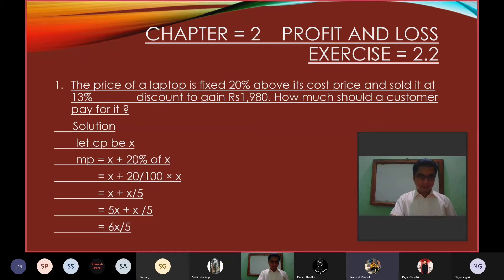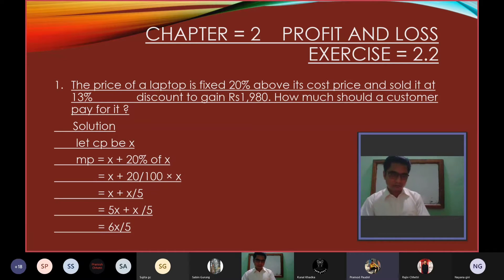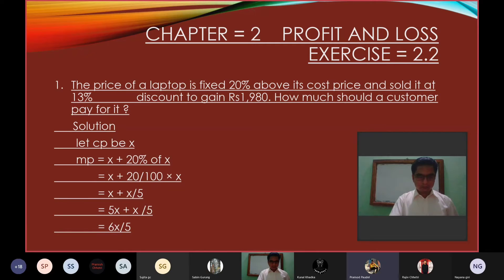Solution: Let CP be x. MP is equal to CP plus 20% of CP. MP equals x plus 20/100 multiplied by x, which is x plus x/5, equals 5x plus x over 5, equals 6x/5.